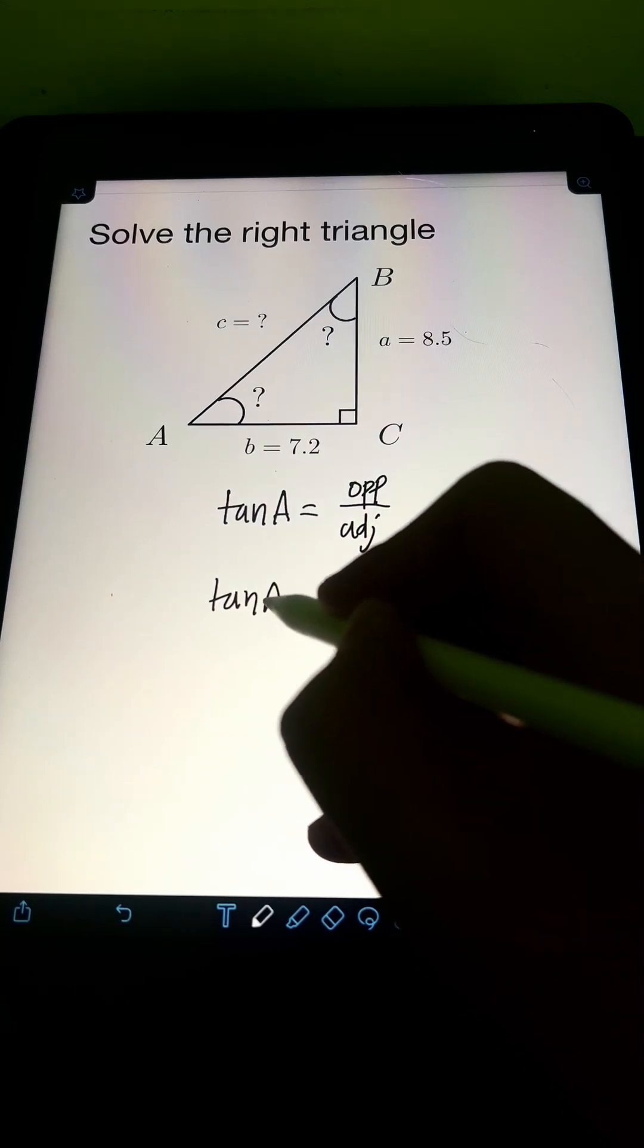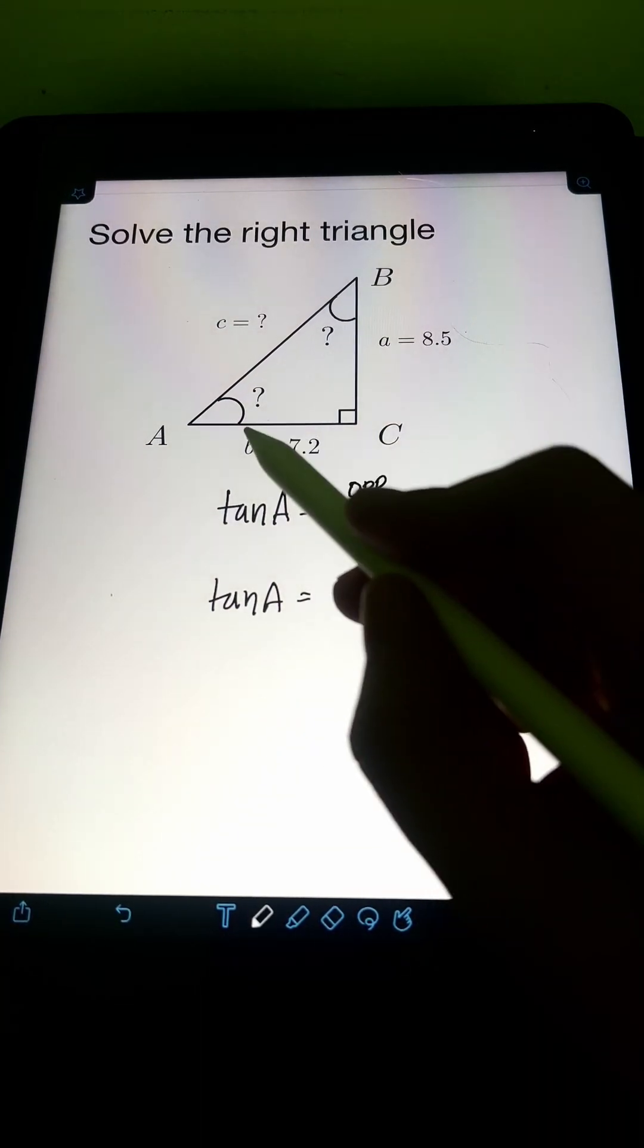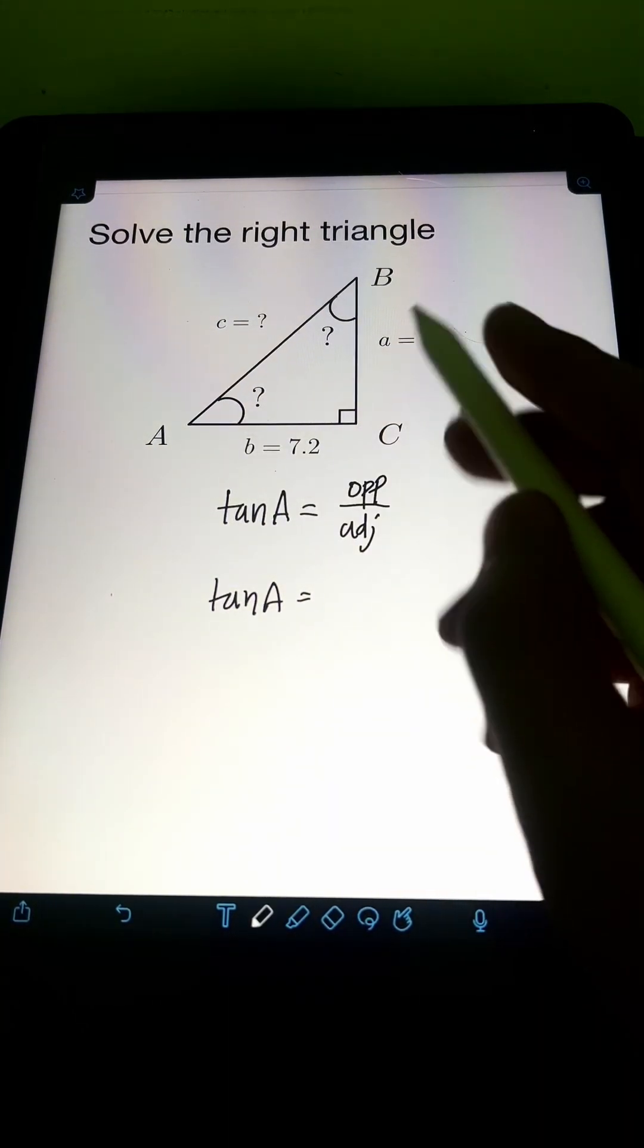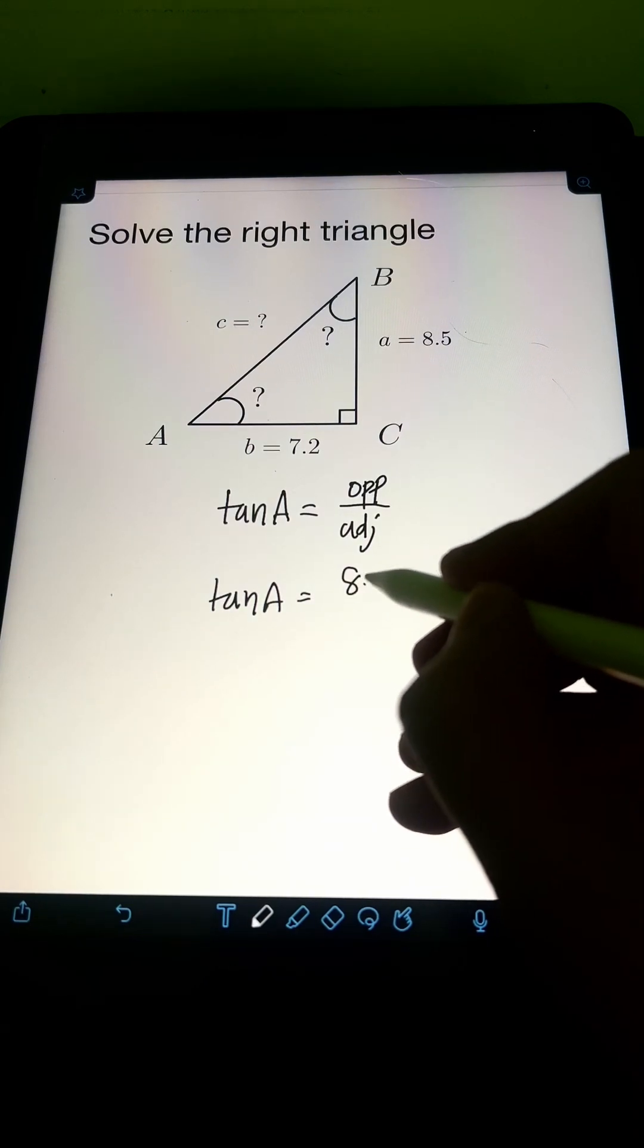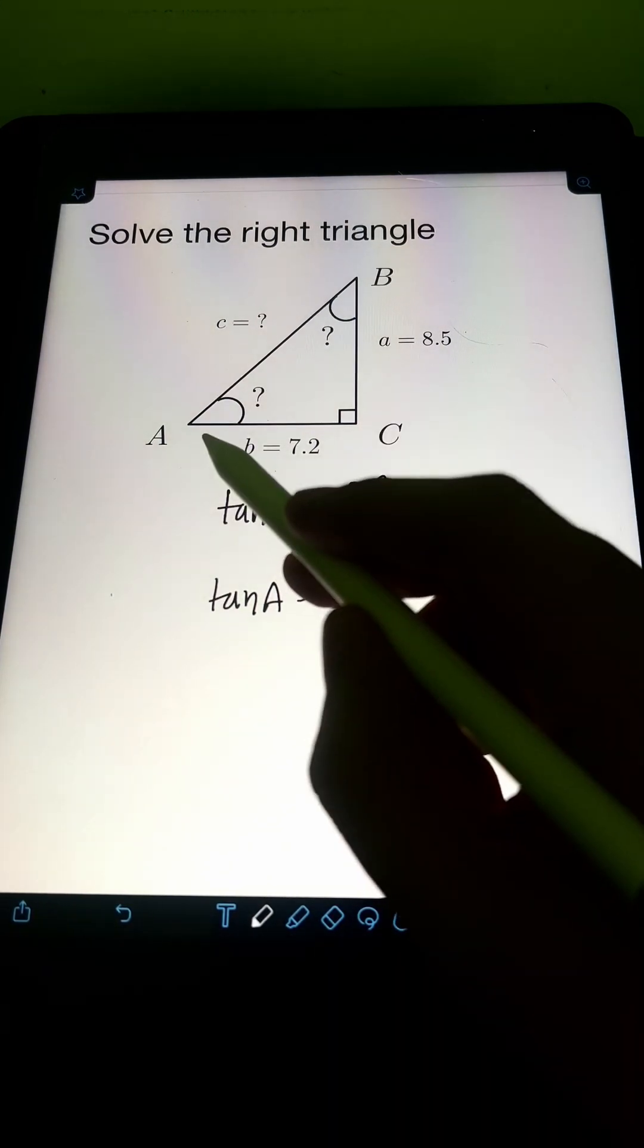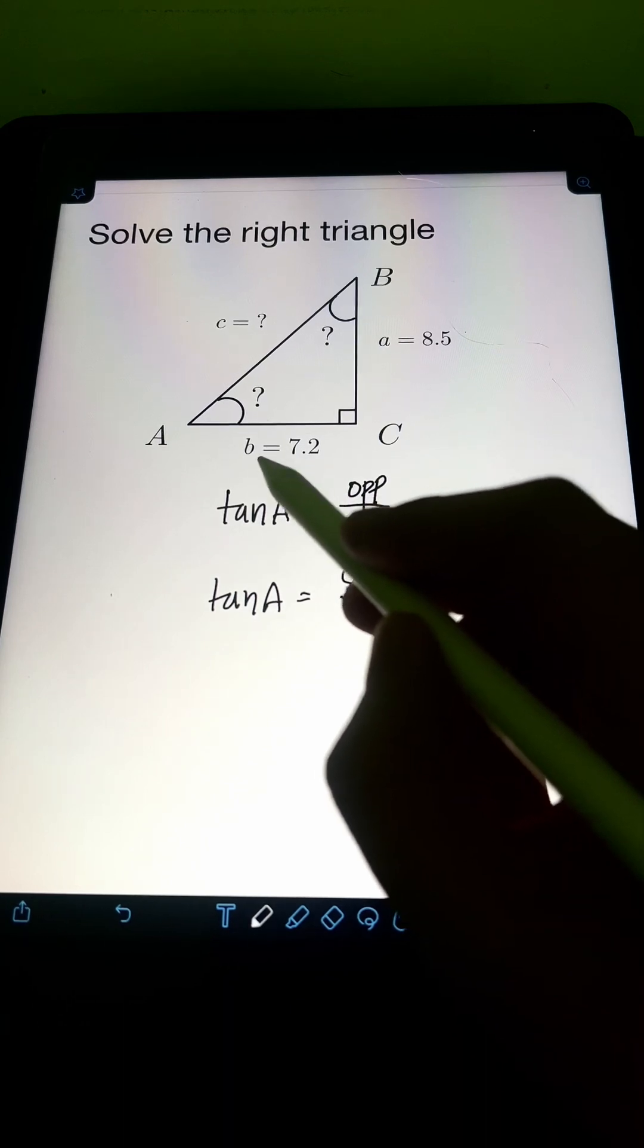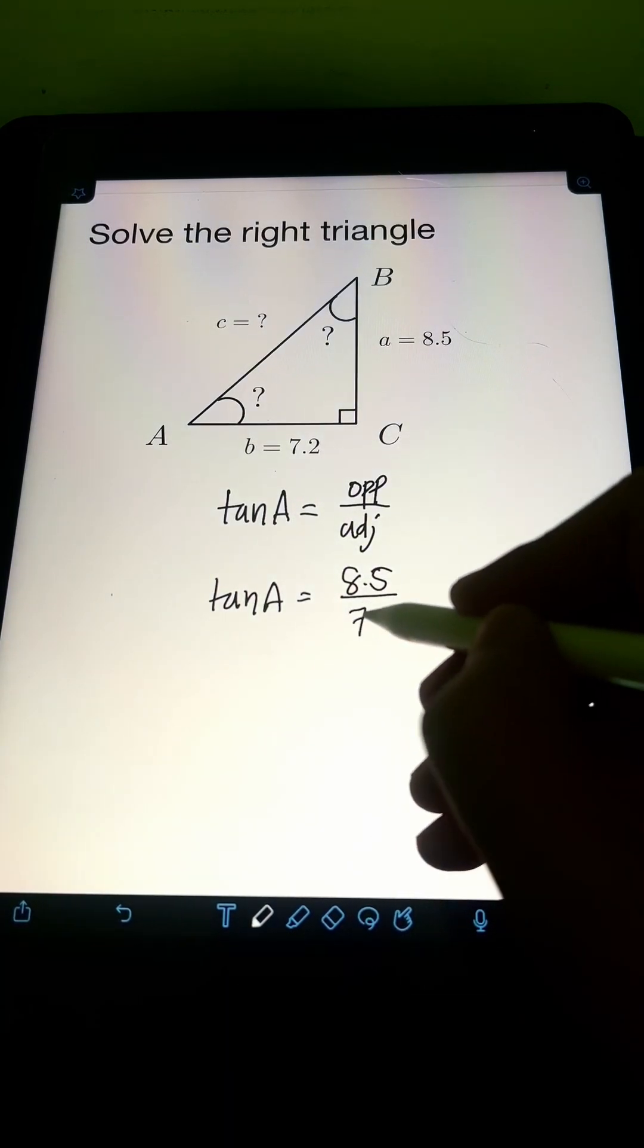So we will have tangent of A is equal, so the opposite side to angle A is side A which is equal to 8.5 over the adjacent side to angle A is B which is equal to 7.2.